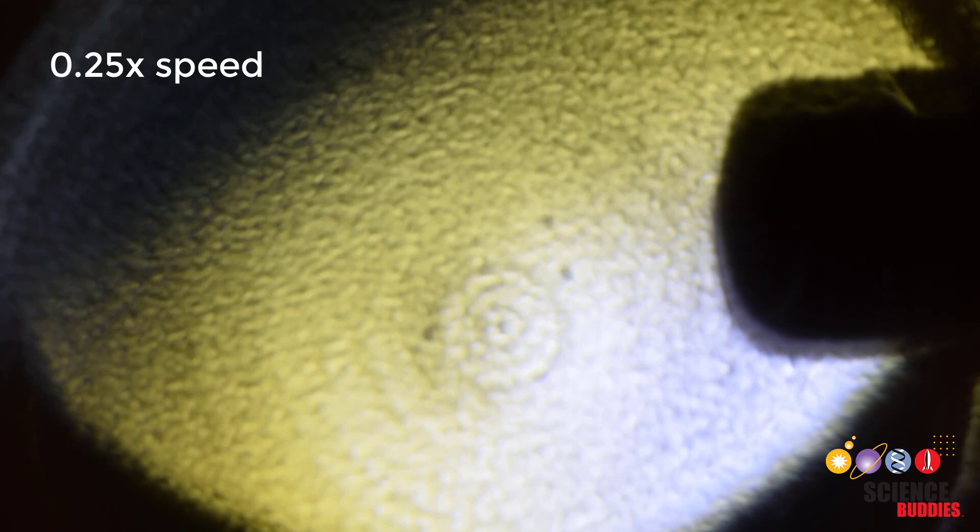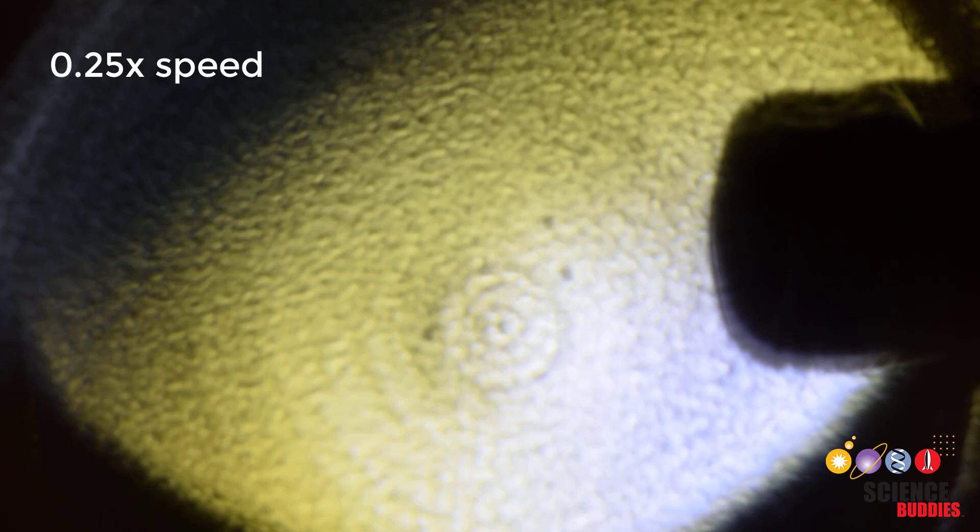Zoomed in on the lighter with the Schlieren setup, including the light block, and also using a slightly better mirror, I'm able to see very subtle puffs of gas coming out of the tip of the lighter that weren't visible just with the shadow graph setup.